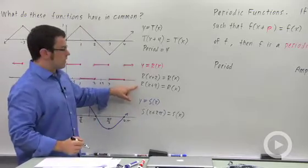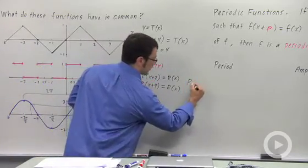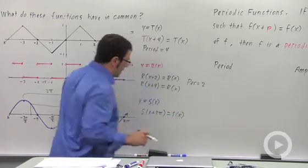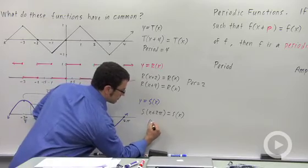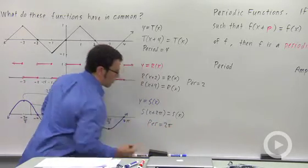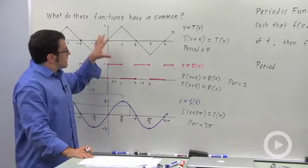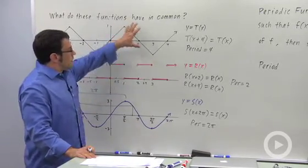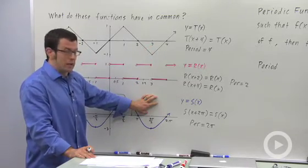So here, the period is 4. For R, the period is 2, that's the smallest value that works. And for S, the period is 2 pi. That means that these functions will repeat themselves every 4 units, this one 2 units, this one 2 pi units.